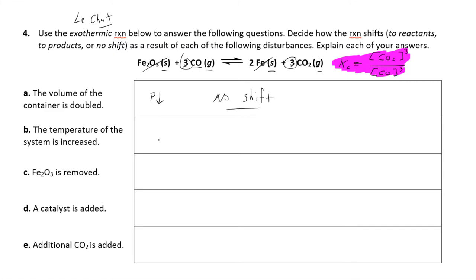If we increase the temperature, we go back to the problem — it's exothermic. That means heat is a product, so we can write heat on the product side. If we increase temperature, it's basically like putting heat into the reaction, so we shift back to the left — shift to reactants. You add a product, you shift back.